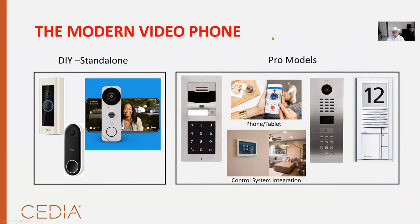New video phones — yes, video phones. You don't have to have a box inside the house; it can come to your iPhone. There are standalone types: they don't integrate well, they're inexpensive, and they work okay if you have good Wi-Fi. Then there are the pro models. Companies like 2N, DoorBird, and Siedle will integrate with major control systems like Control4 and those things. They also have a more aesthetic look than you'll find in some of the other options.